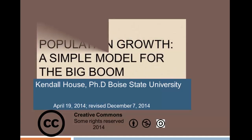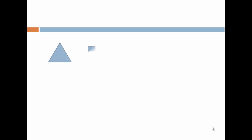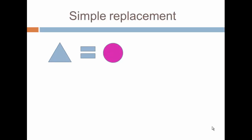This presentation is called 'Population Growth: A Simple Model for the Big Boom.' We're going to start with what's called simple replacement, where one generation simply replaces the prior.